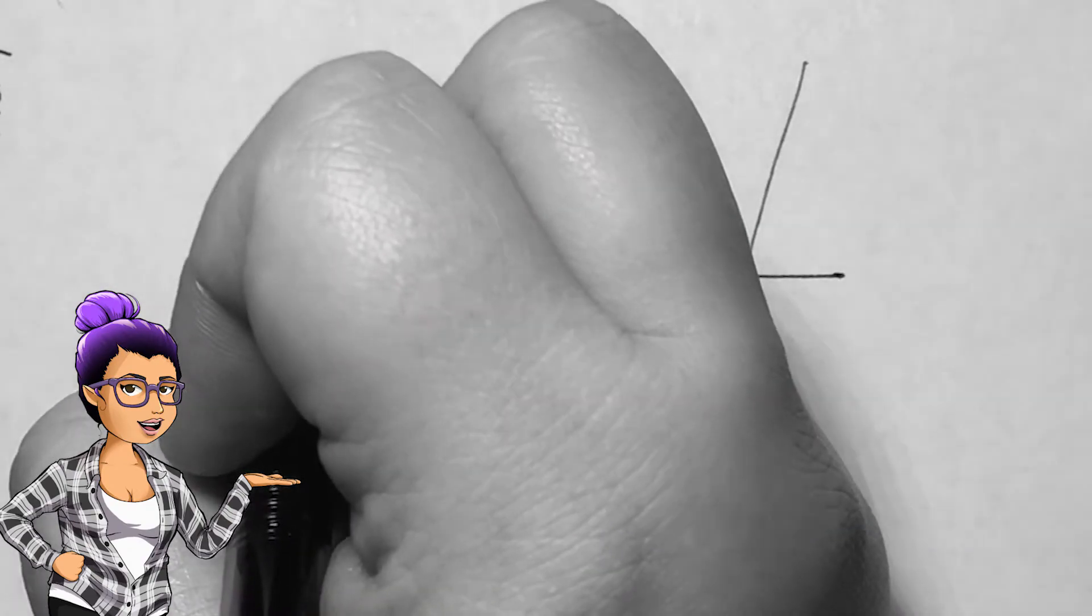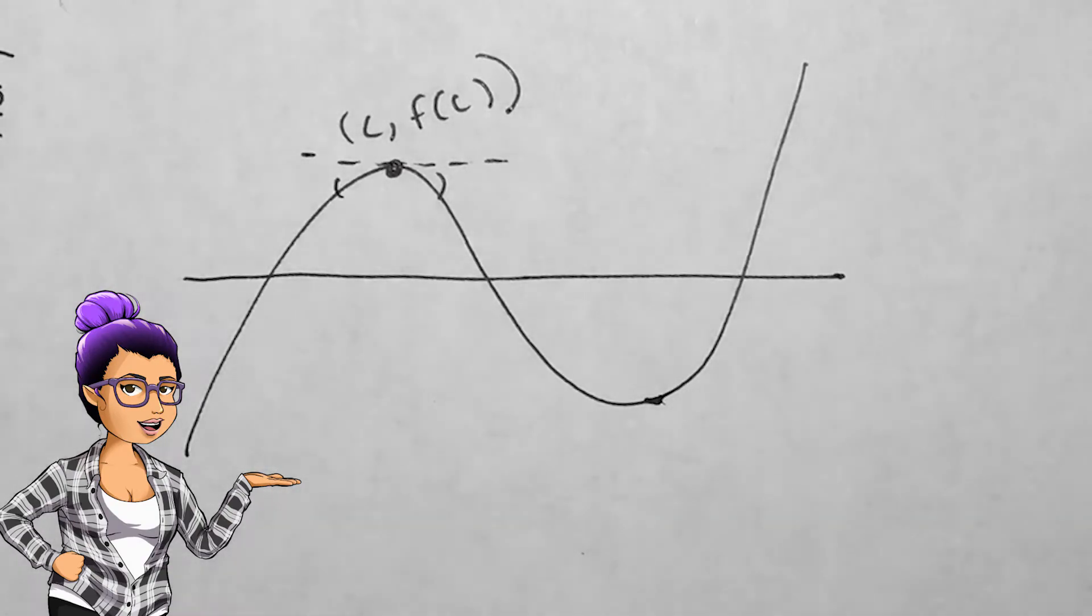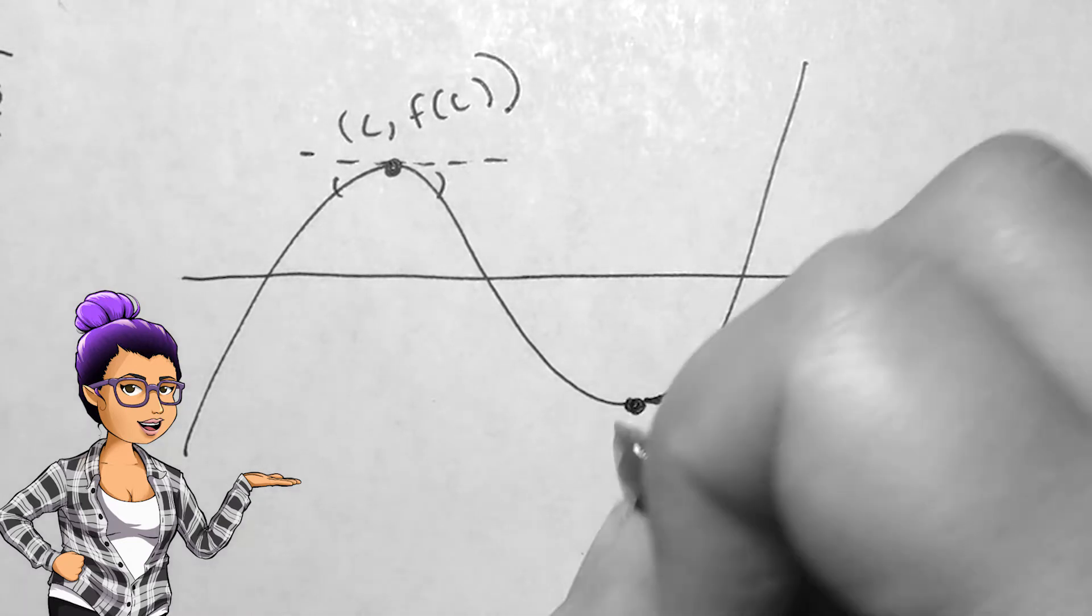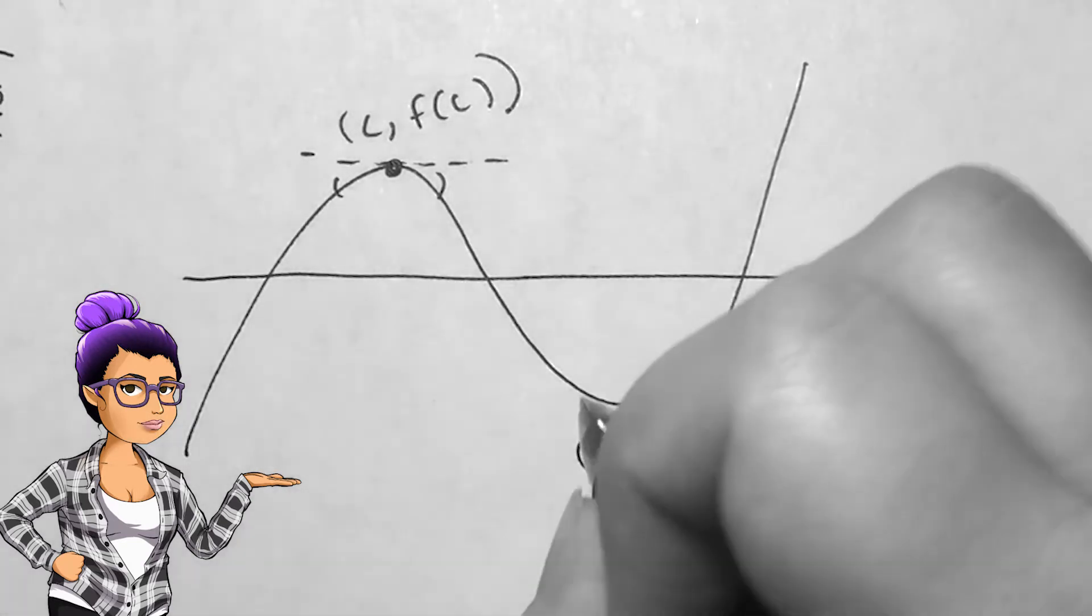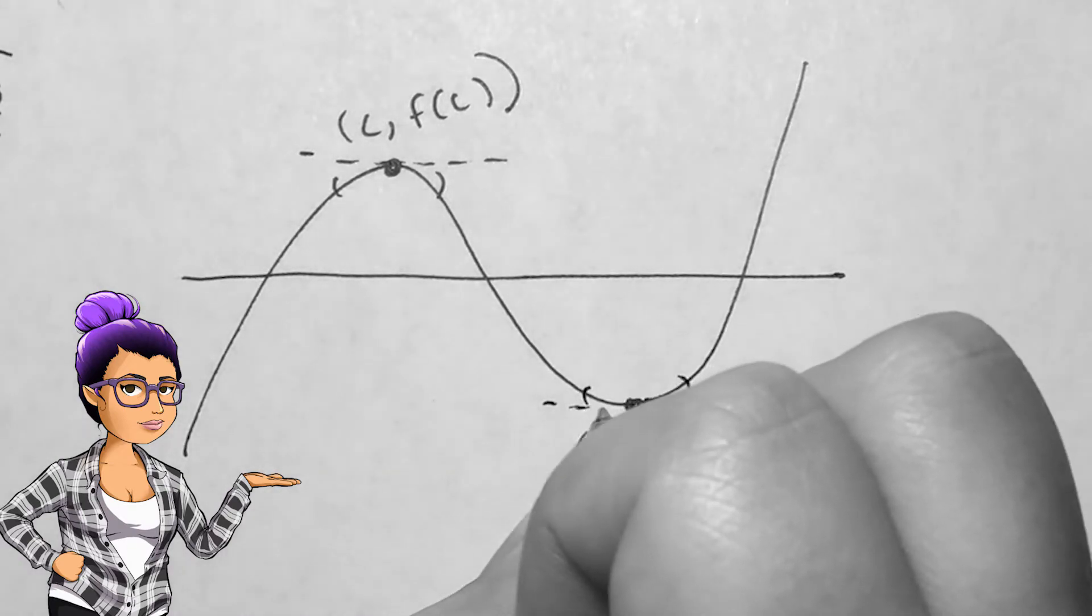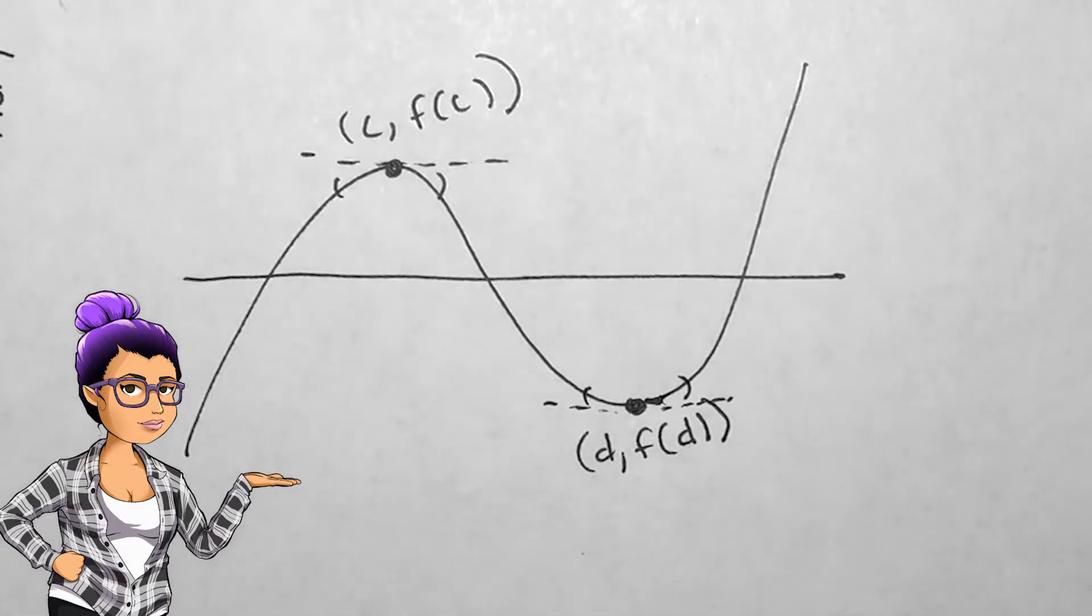Similarly, we can find a local minimum d, f of d, as long as we can find an interval around d where f of d is the smallest output. These outputs, f of c and f of d, are called the local extreme values.